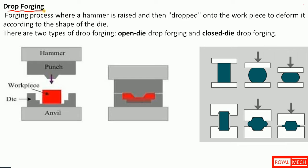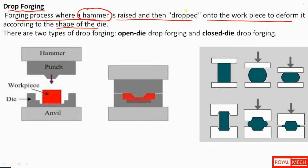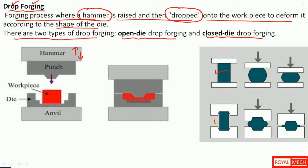Drop forging is a forging process where a hammer is raised and then dropped onto the workpiece to deform it according to the shape of the die. There are two types of drop forging: open die drop forging and closed die drop forging.